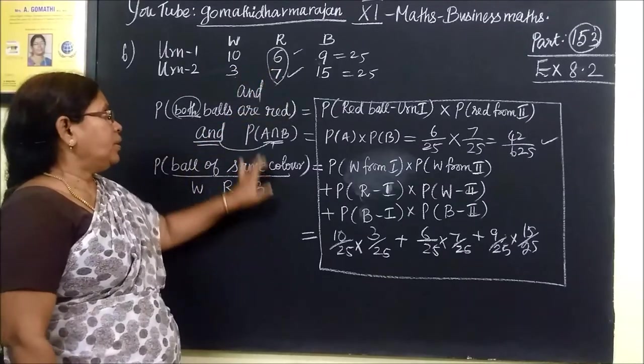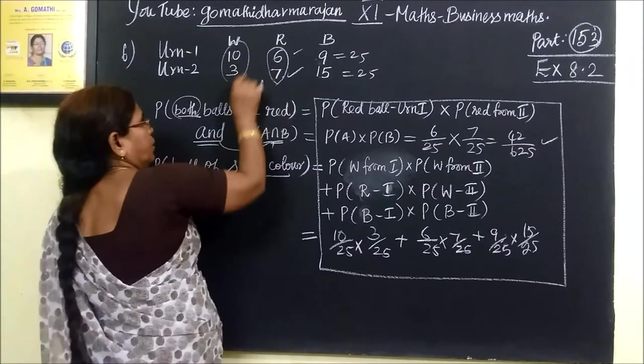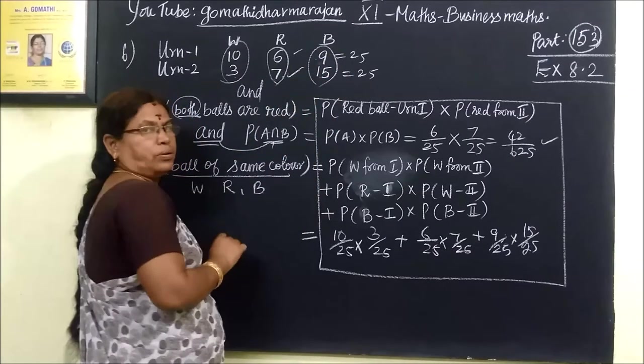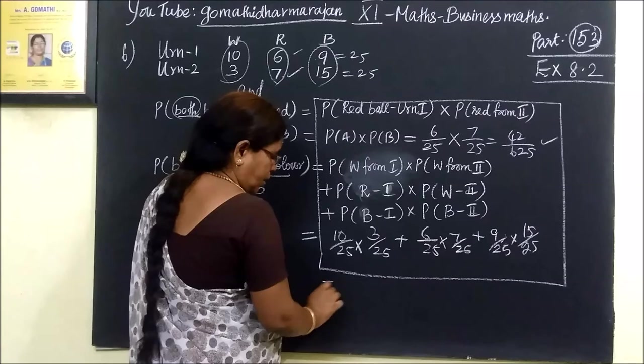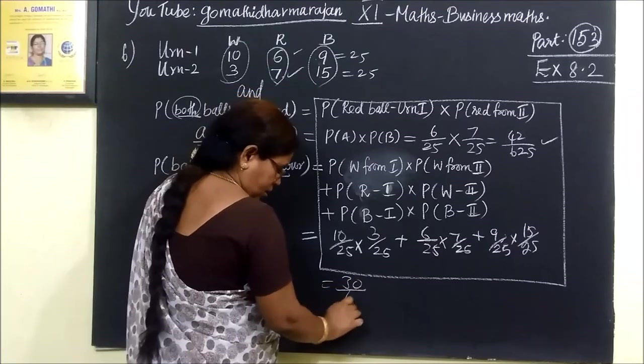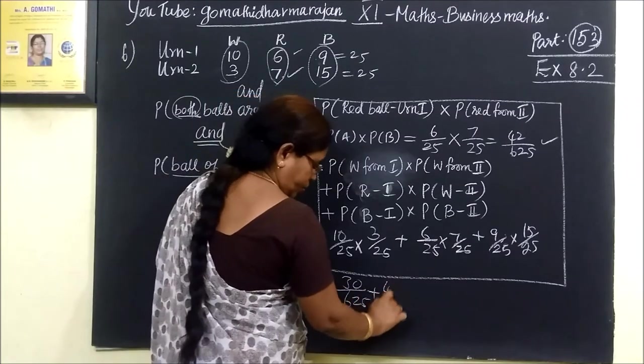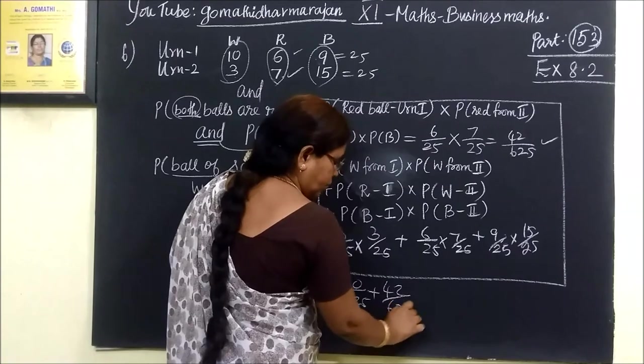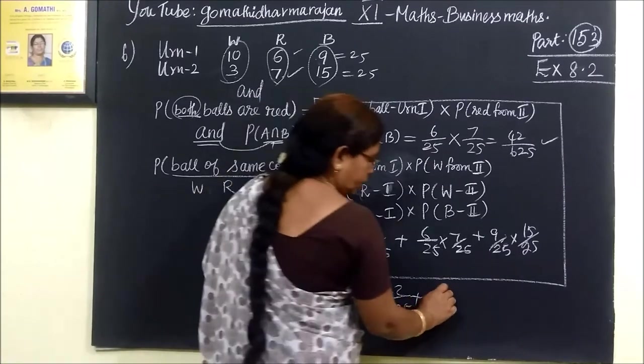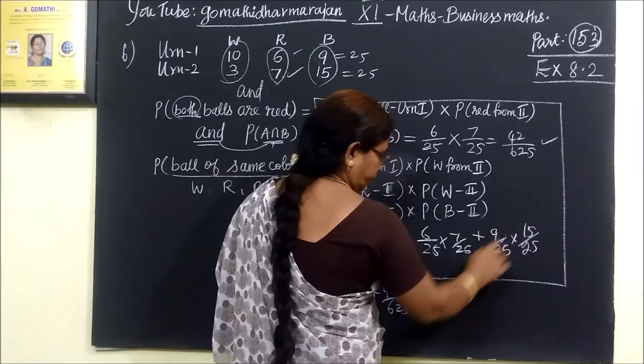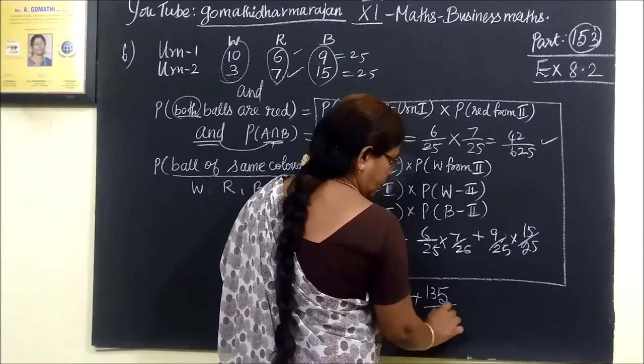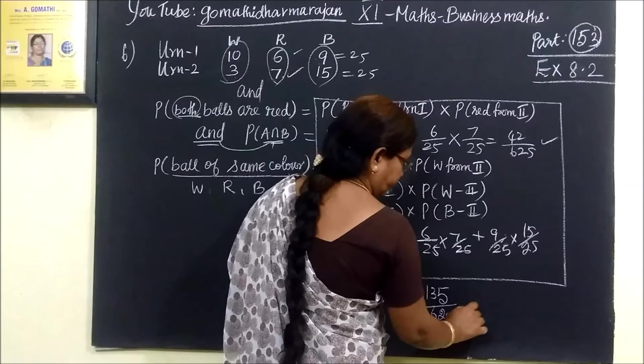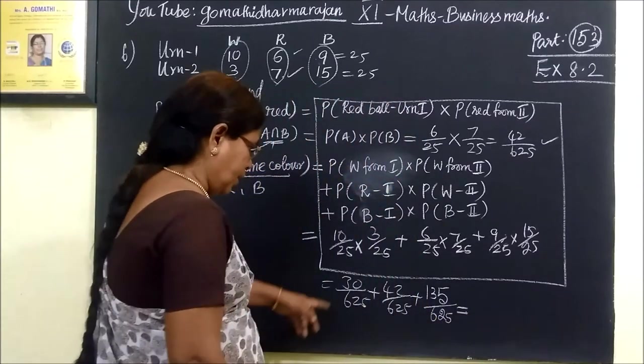The same thing is, you can read it, you can read it, you can read it and add it. So that you are getting 35, 625, 425, 625. What was that? 135 by 625. So that is happening now.